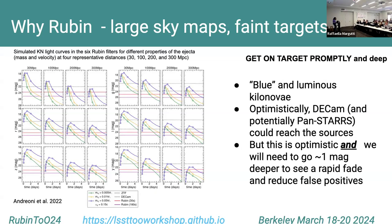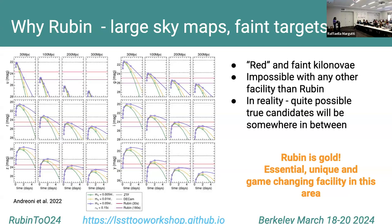While we could also do this kind of job with DECam or potentially Pan-STARRS, we need to go at least one magnitude deeper. The kilonova emission has two kinds of components — the blue and the red. The red kilonova component is essentially impossible to observe without Rubin. A true candidate will probably be somewhere in between, but with Rubin we will certainly be able to find these components.